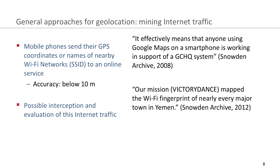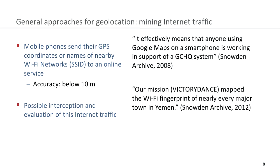If you want to determine location with SSIDs, it is necessary to have a map of where certain Wi-Fi access points are located. We have proof that this has been done by the NSA — this is the mission Victory Dance, where they are mapping the Wi-Fi fingerprint in every major town in Yemen. And in Yemen, a lot of drone strikes are conducted.